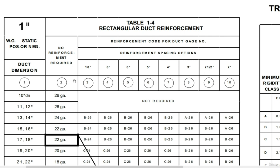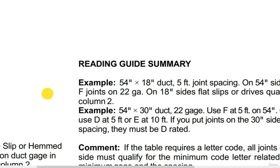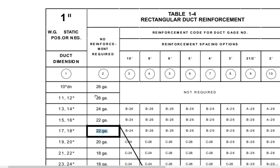Note that the values in the circles denote the column number. Columns 3 to 10 give you the reinforcement code for duct gauge based on the reinforcement spacing options. We are using the reinforcement option of 5 feet, so I use that as my column entry point and the duct dimension as my row point, then cross them to obtain the required value. For the 18-inch duct, which represents the duct height, it falls between 17 and 18 inches. I can see that no reinforcement is required if I use gauge 22, as noted: flat slips or drives qualify per column 2, meaning no reinforcement is required.